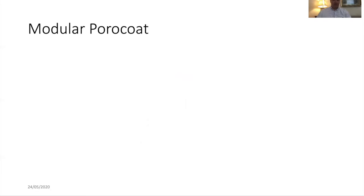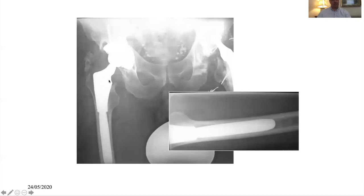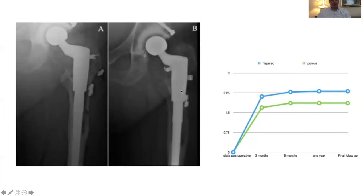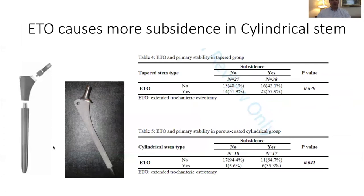A modular porous coat was developed allowing more extensive adjustment for leg length and offset, but still with a scratch-fit principle — so you wouldn't use it where there's a lack of four to six centimeters. We will be publishing a paper comparing modular tapered stems versus modular cylindrical porous-coat stems from a historic series. It demonstrated slightly more subsidence — a millimeter or two — in the tapered stem, but not of clinical significance. However, when an extended trochanteric osteotomy was performed, there was substantially more subsidence of cylindrical porous-coat stems, suggesting that if there's proximal bone osteotomy or fracture, a taper stem is preferable.